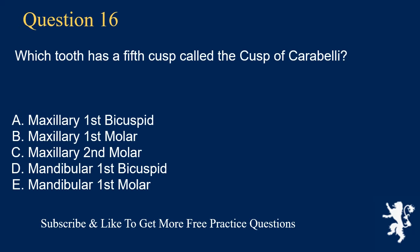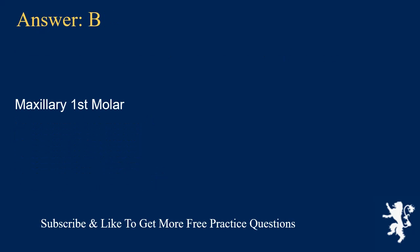Question 16. Which tooth has a fifth cusp called the cusp of Carabelli? A. Maxillary first bicuspid, B. Maxillary first molar, C. Maxillary second molar, D. Mandibular first bicuspid, E. Mandibular first molar. Answer: B. Maxillary first molar.